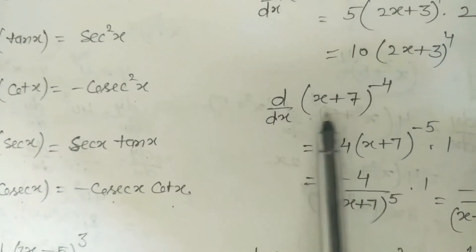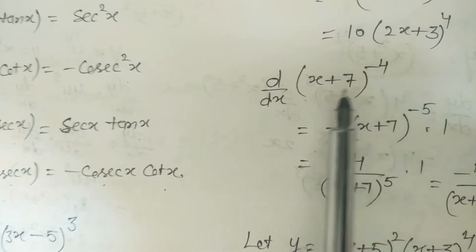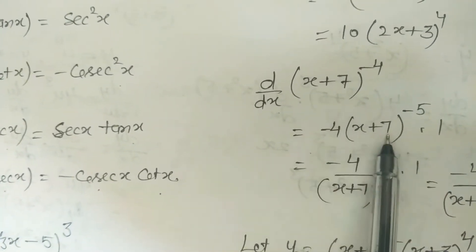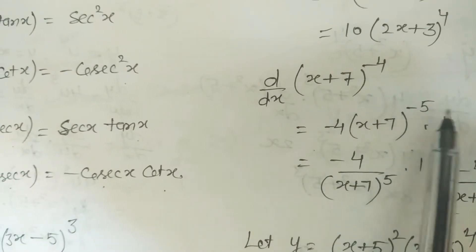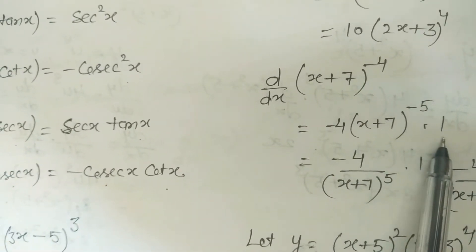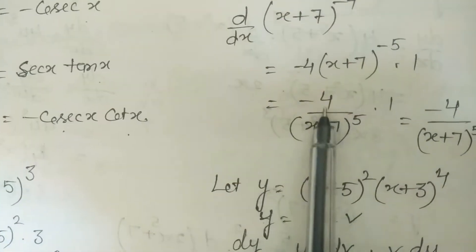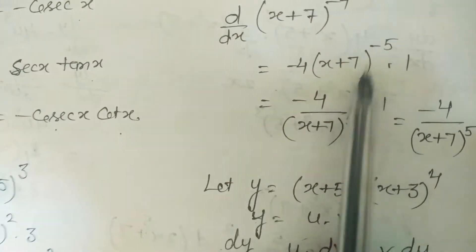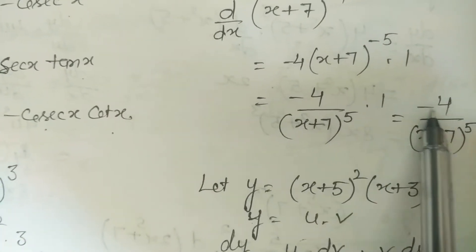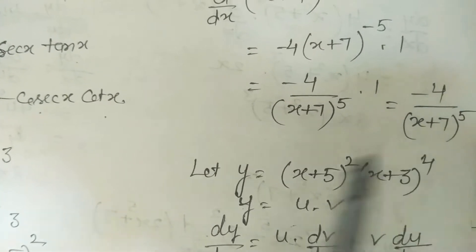Another example: derivative of (x+7)^(−4). Applying the formula: −4·(x+7)^(−4−1)·1 = −4·(x+7)^(−5), which is −4 upon (x+7)^5.